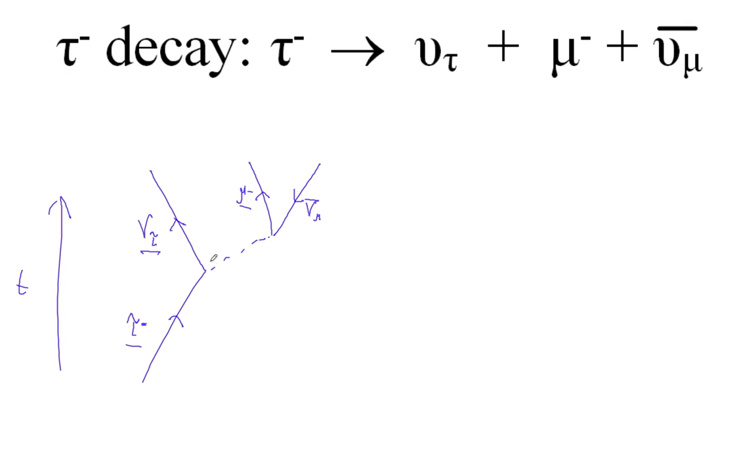Now we've got to figure out the exchange particle. Notice that this is negatively charged over here, so we make a W minus—that works, right? If we look at the charge, we have negative charge going into this vertex, negative charge going out, zero charge going out, so that works.